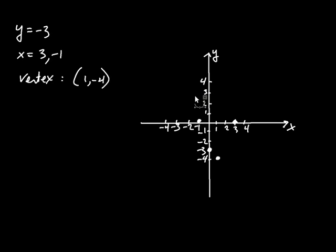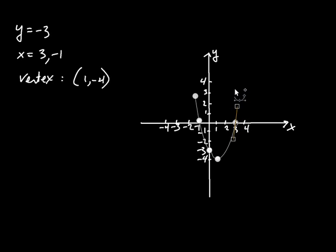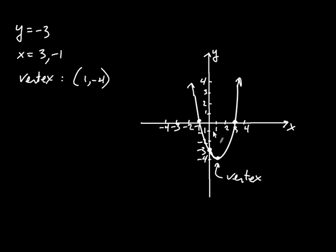The parabola goes through those plotted points with some curvature. There's the curve — it continues up on both sides. The smooth bottom point is the vertex. Parabolas look like u-shapes: they get wider and wider and are smooth at the vertex. This one opens up and has two x-intercepts.